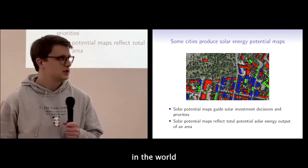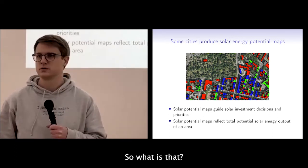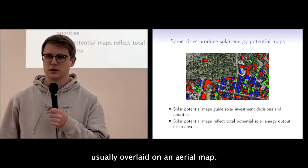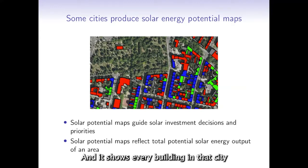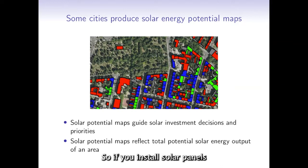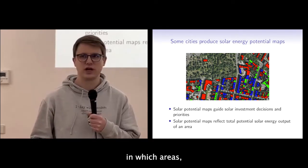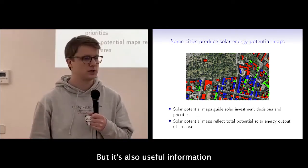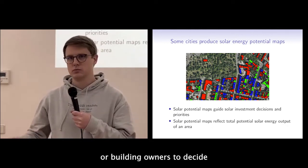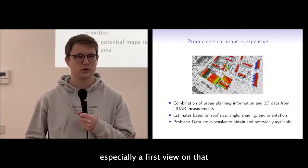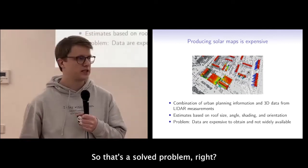Some cities in the world produce solar energy potential maps. That's basically a top-down view of a city, usually overlaid on an aerial map, showing for every building and every roof how suitable it would be to install solar panels and how much energy they could produce. Cities use this to prioritize investments, and it's also useful for homeowners or building owners to decide if it's economically feasible to install solar panels.